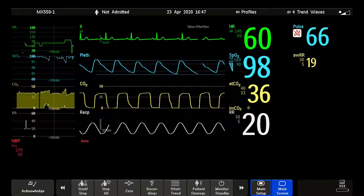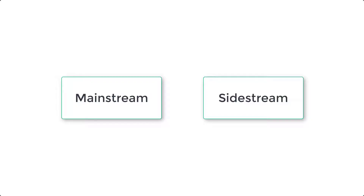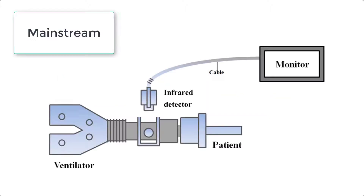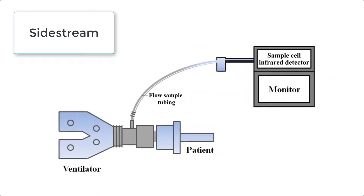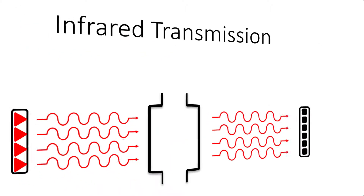In the Intelliview patient monitor family, there are two methods for measuring CO2 in the patient's airway: mainstream and sidestream. The mainstream measurement uses a CO2 sensor attached to an airway adapter directly inserted into the patient's breathing system. The sidestream measurement takes a sample of respiratory gas with a constant sample flow from the patient's airway and analyzes it with a remote CO2 sensor built into the measurement system.